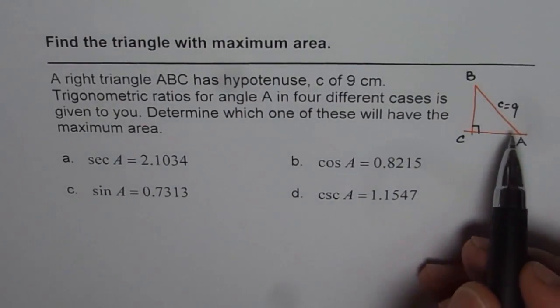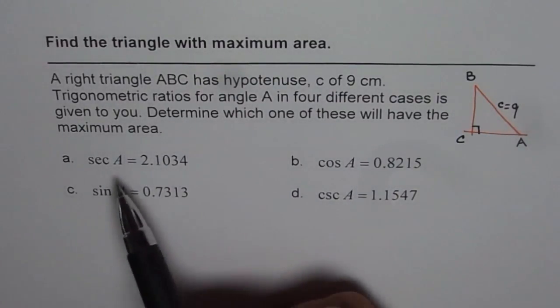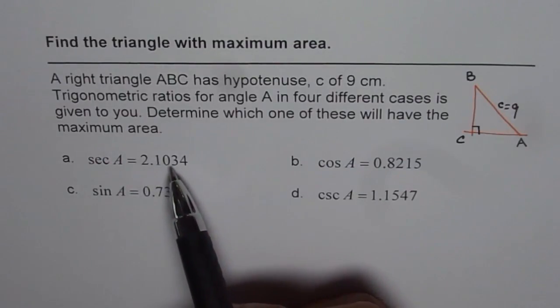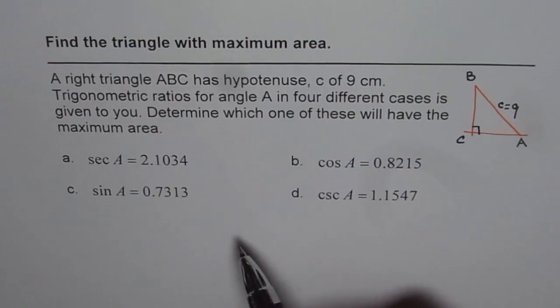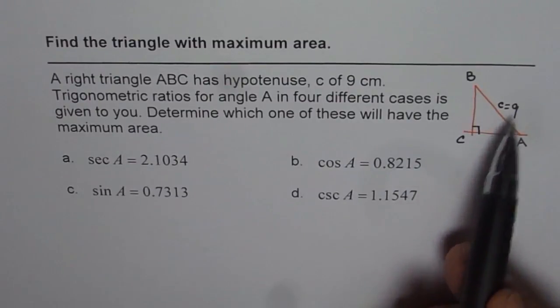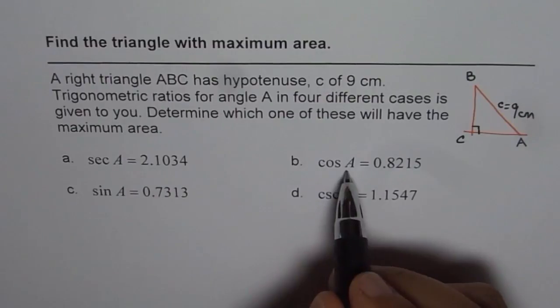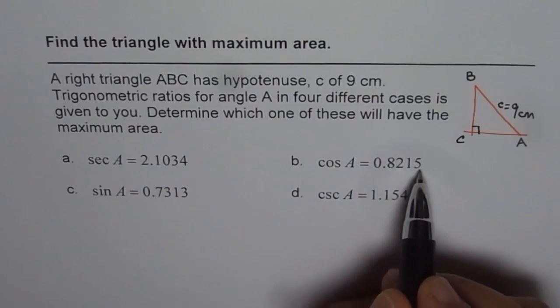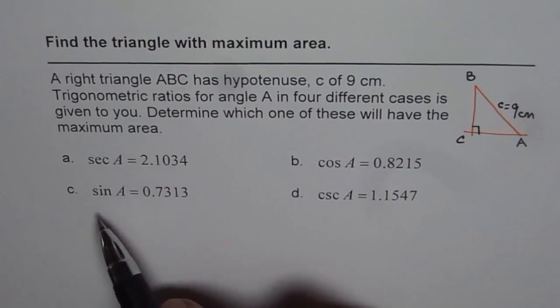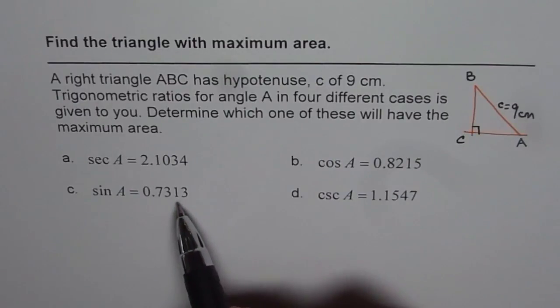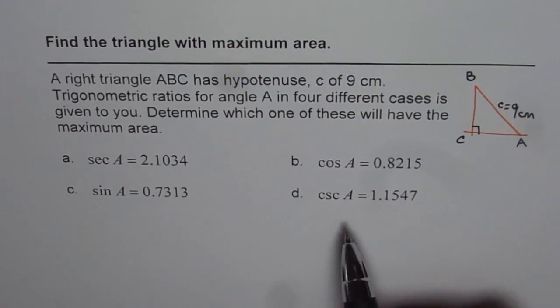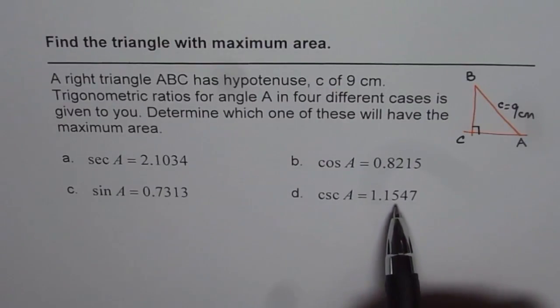Now there could be many different cases. The first case is secant A is 2.1034. Then we have another triangle whose hypotenuse is 9 cm but cos of A is 0.8215. And the third one has sin of A as 0.7313. And the fourth one has cosecant A equals to 1.1547.